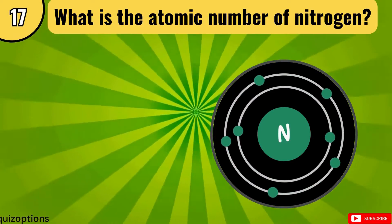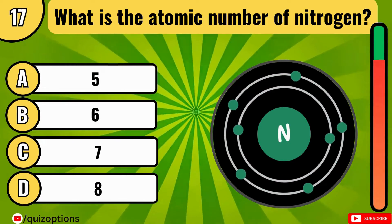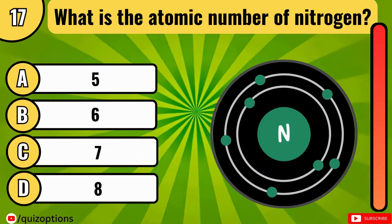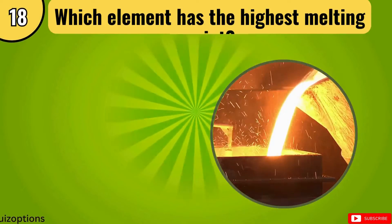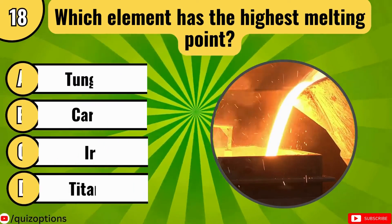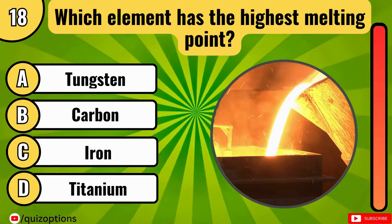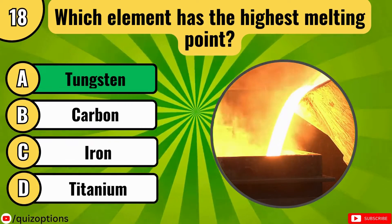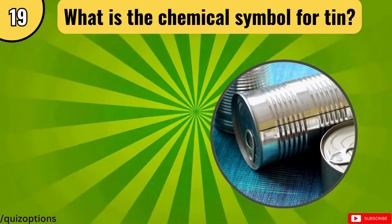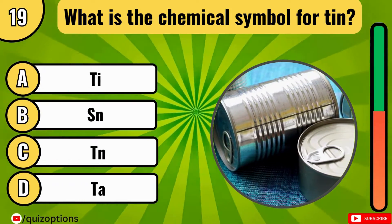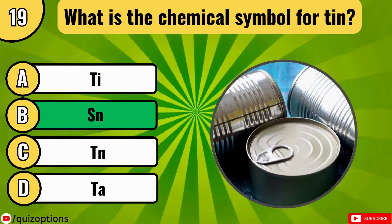What is the atomic number of nitrogen? Which element has the highest melting point? What is the chemical symbol for tin? The correct answer is Sn.